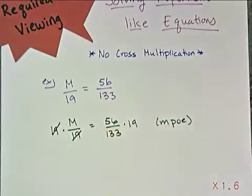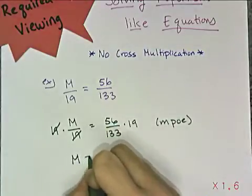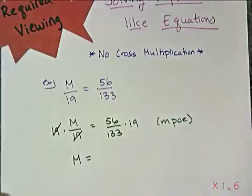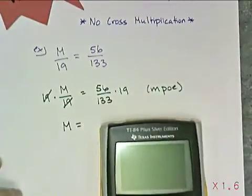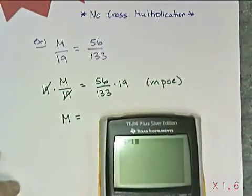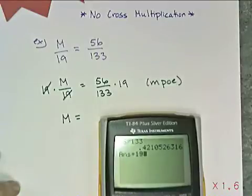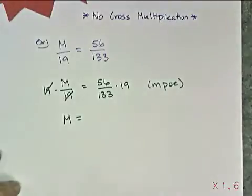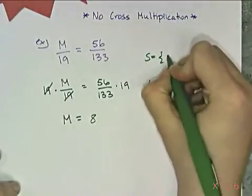This cancels those 19s, so what I'm left with is M on that side, which is what I need when I solve an equation. And so then, now all I need to do is figure out what 56 divided by 133 times 19 is, and that is just an 8. So that means that my solution is 8.